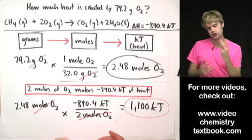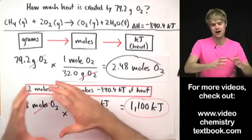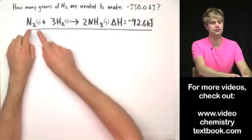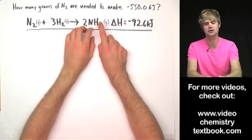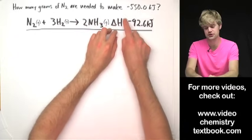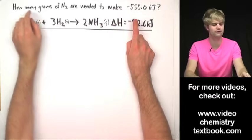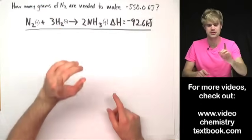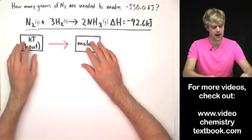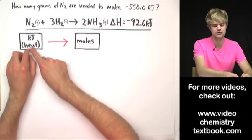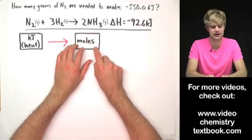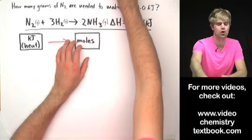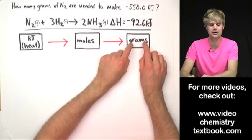Now let's do two practice problems where we go the other way: we start with a certain amount of heat and figure out how much chemical we need to produce that heat. Here's an equation for nitrogen gas combining with hydrogen gas to make ammonia — it also releases heat, as the negative delta H indicates. We want to find how many grams of N2 we need to make this much heat. The steps: use the heat amount to find moles of N2 via the chemical equation, then use molecular weight to convert moles to grams.